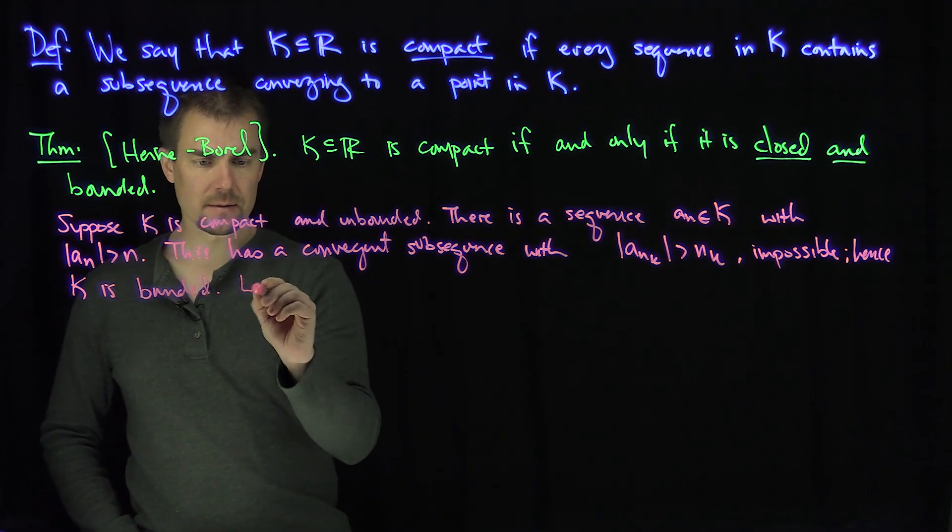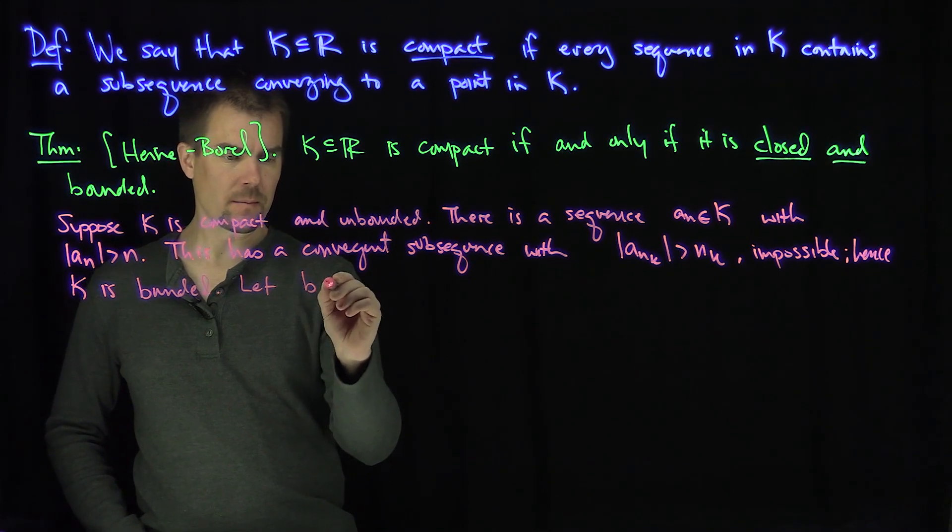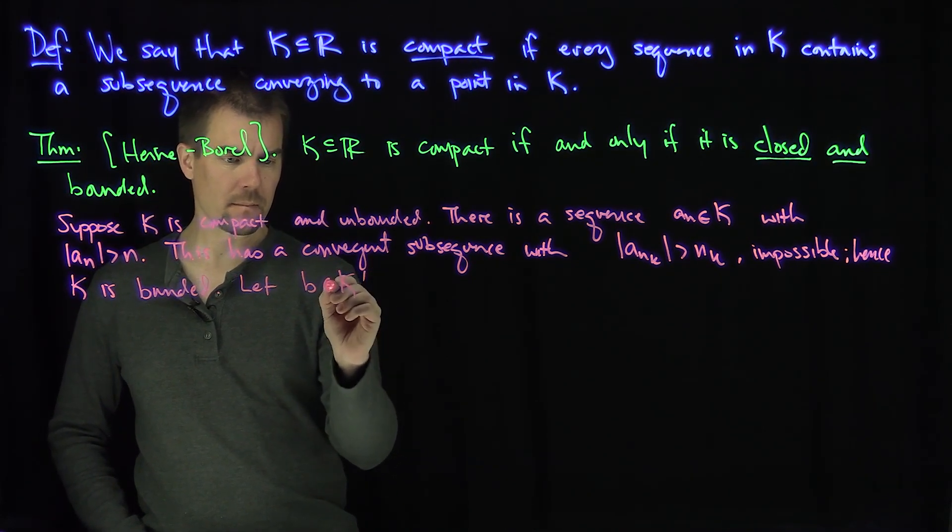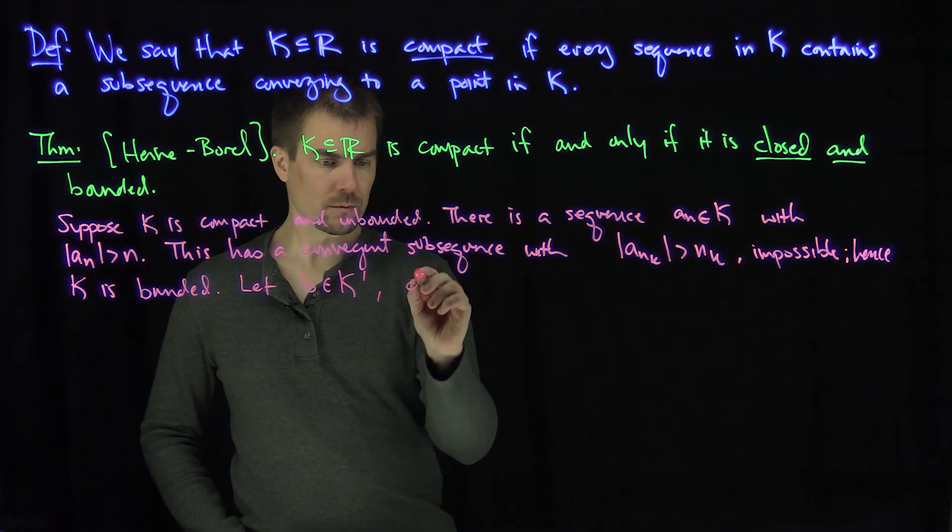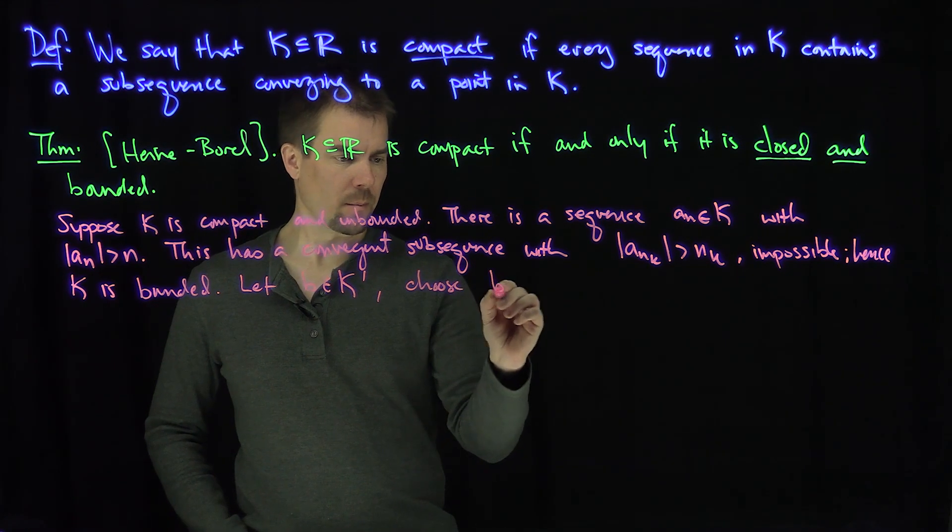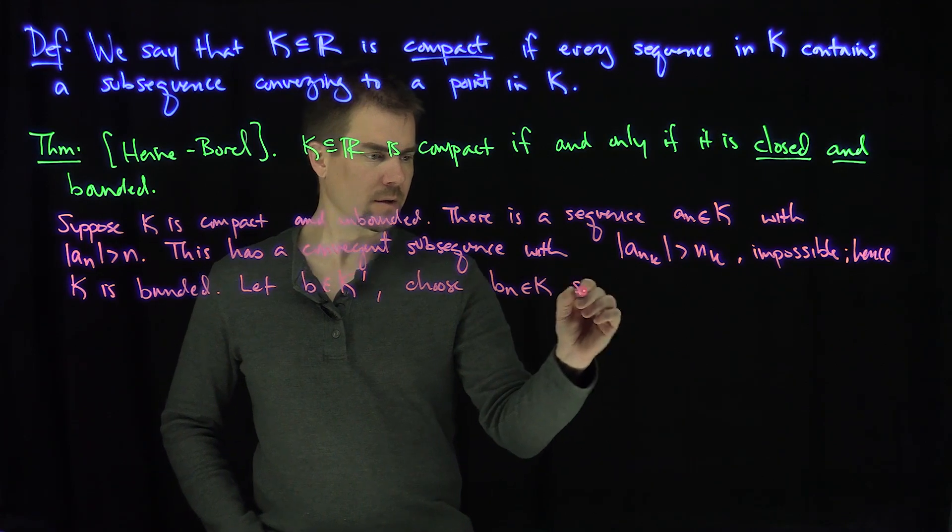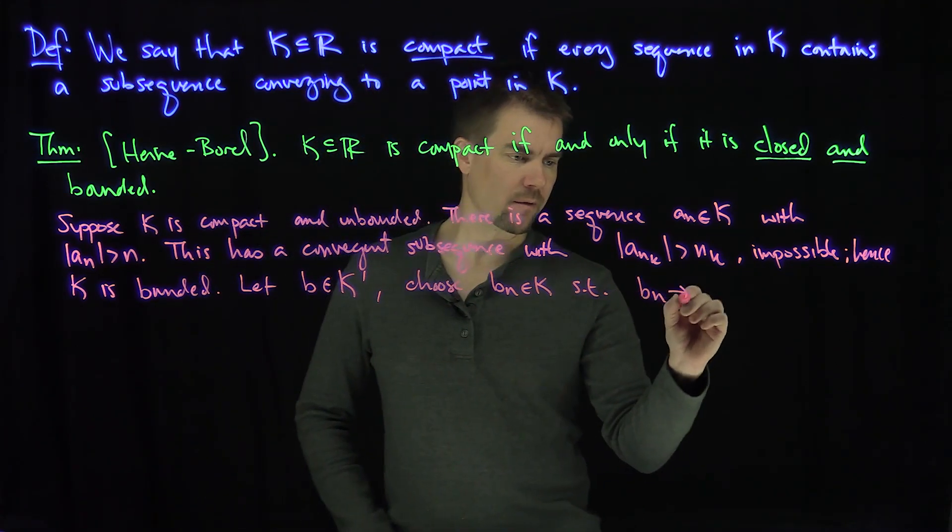Now let's let b be a limit point of k. And we can choose a sequence b_n in k such that b_n converges to b.